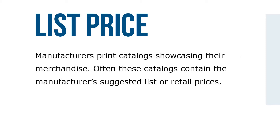Manufacturers print catalogs showcasing their merchandise. Oftentimes these catalogs contain the manufacturer's suggested list or retail prices. Businesses in the trade receive price sheets from the manufacturer listing the trade discounts in percent form associated with each item in the catalog. By issuing updated price sheets of trade discounts, manufacturers have the flexibility of changing the prices of their merchandise without the expense of reprinting the entire catalog.